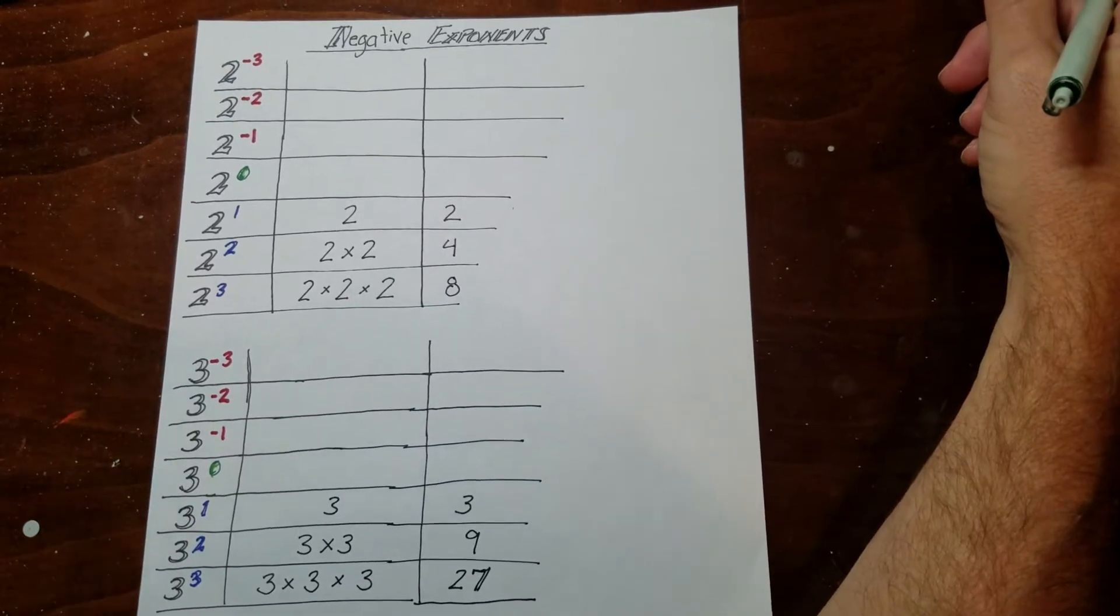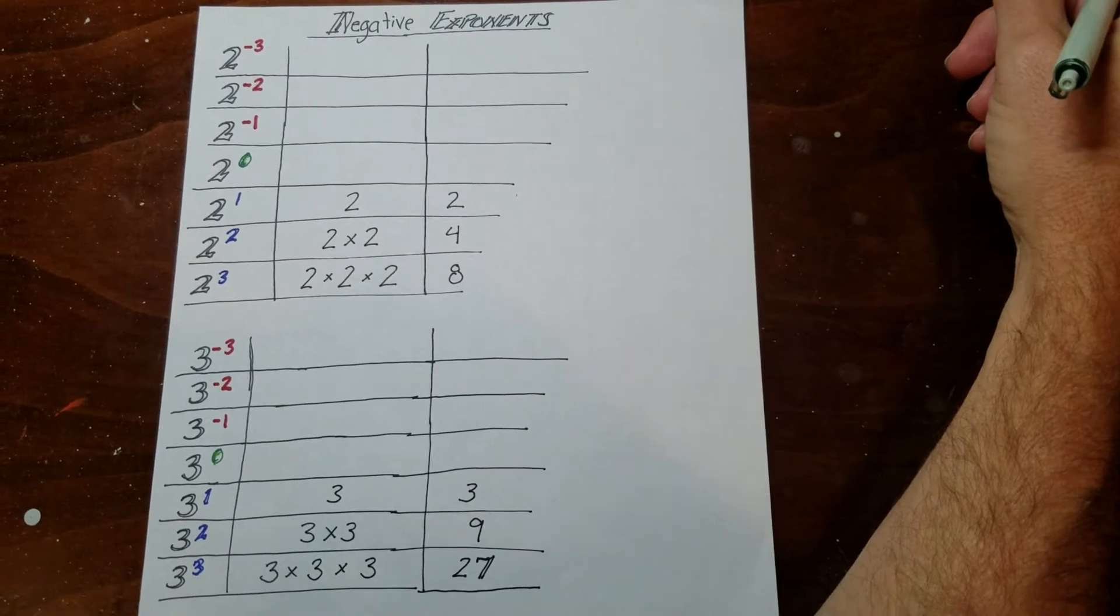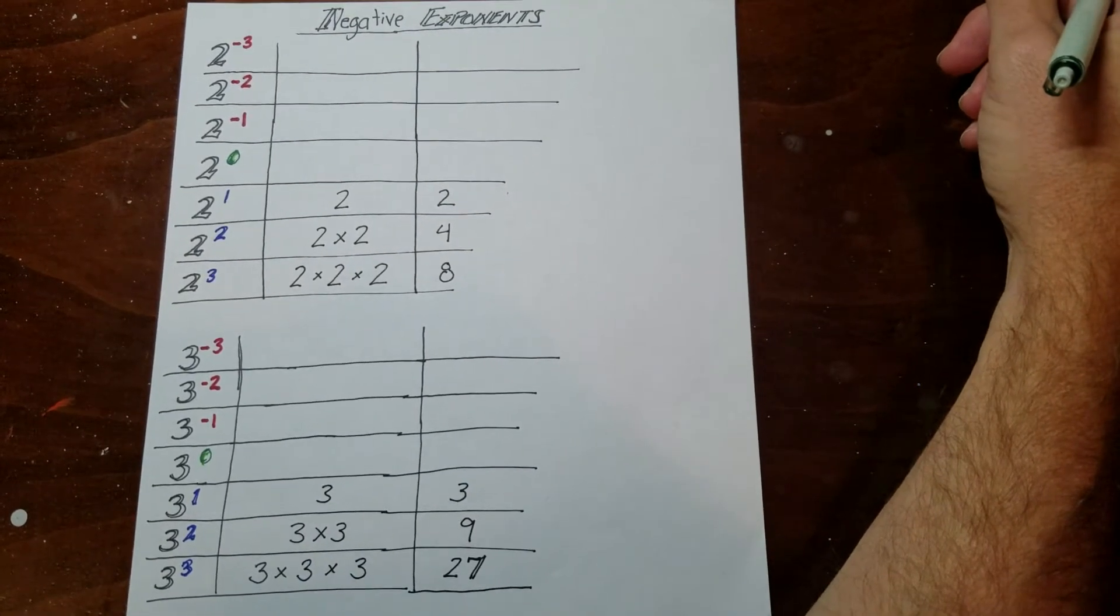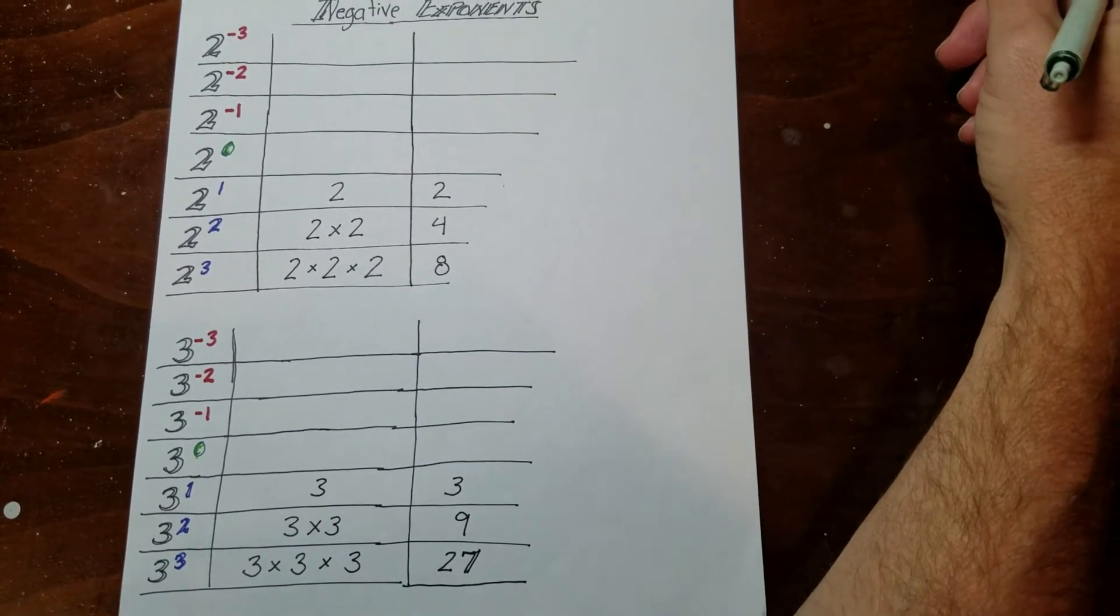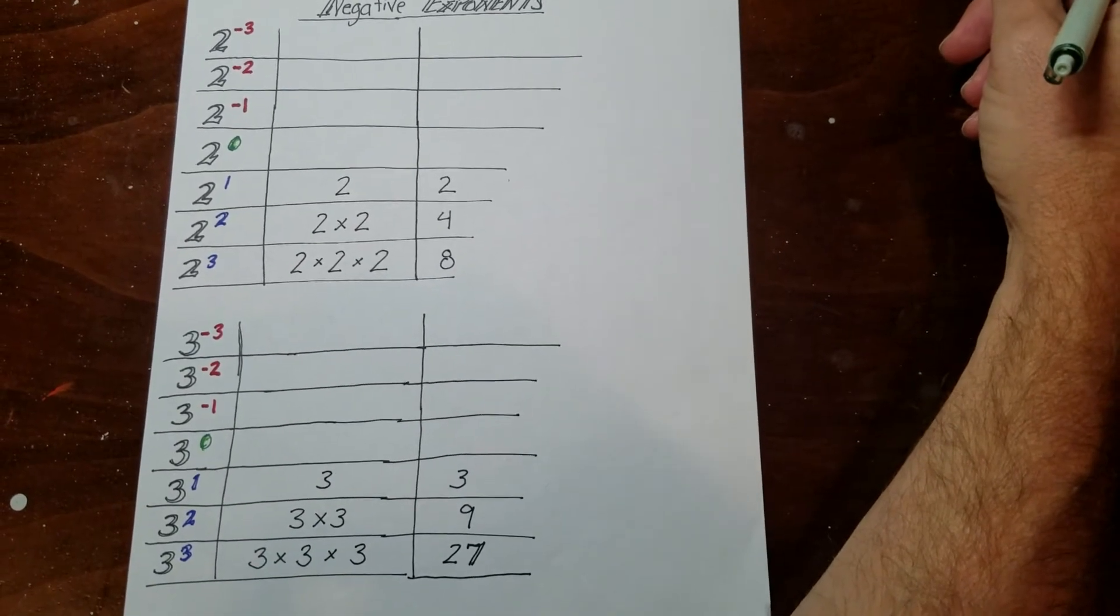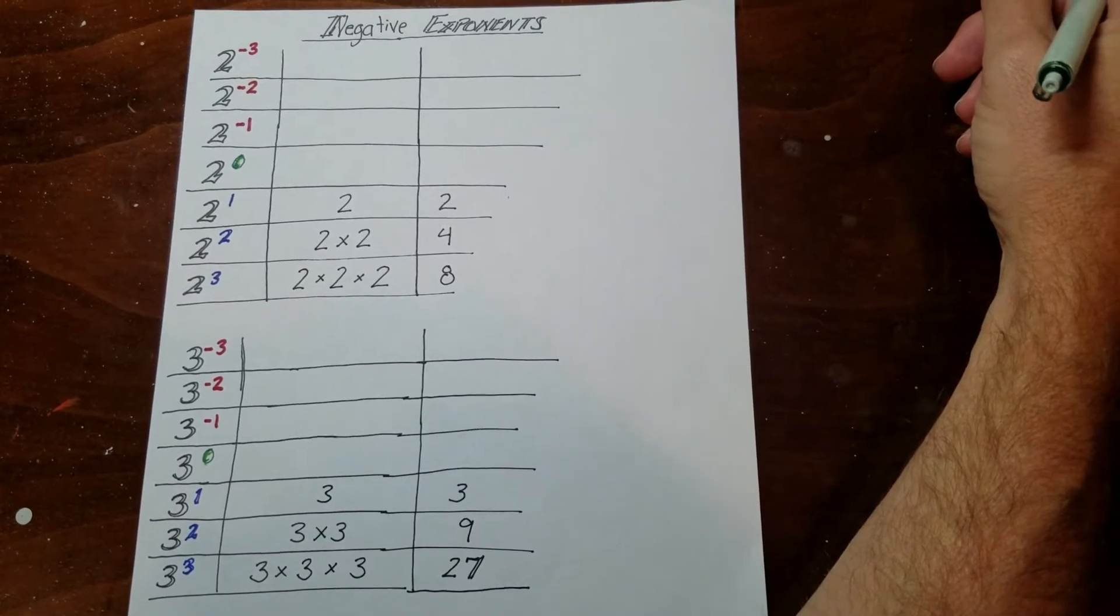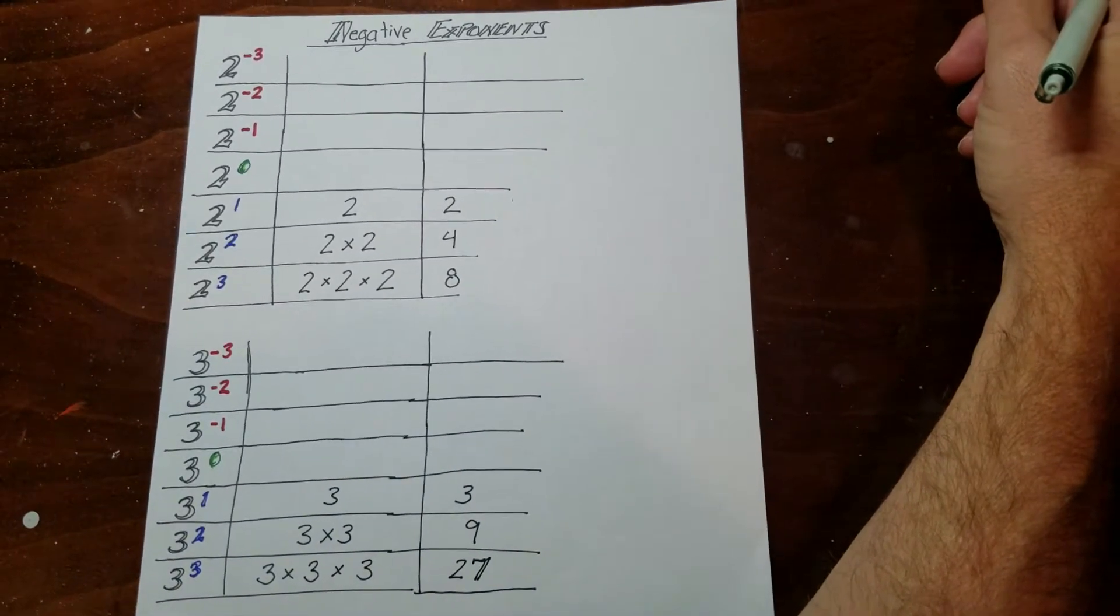Okay, so we're going to do the next exponent lesson here, and this is going to talk about negative exponents. We're going to get into the same stuff we were doing on the last video, which is the exponent rules one, but we're going to talk about the effect these negative exponents have. Basically, we're going to talk about how to understand what these things mean.